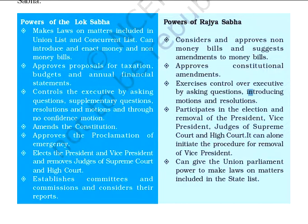Now let us talk about the powers of Rajya Sabha. Rajya Sabha approves and considers non-money bills — approving money bills is the work of Lok Sabha. Rajya Sabha also suggests amendments to money bills and approves constitutional amendments. It controls the executive by asking questions, passing motions and resolutions. It also participates in the election and removal of the President, Vice President, and judges of the Supreme Court and High Courts. Rajya Sabha alone can initiate the procedure for removal of the Vice President.